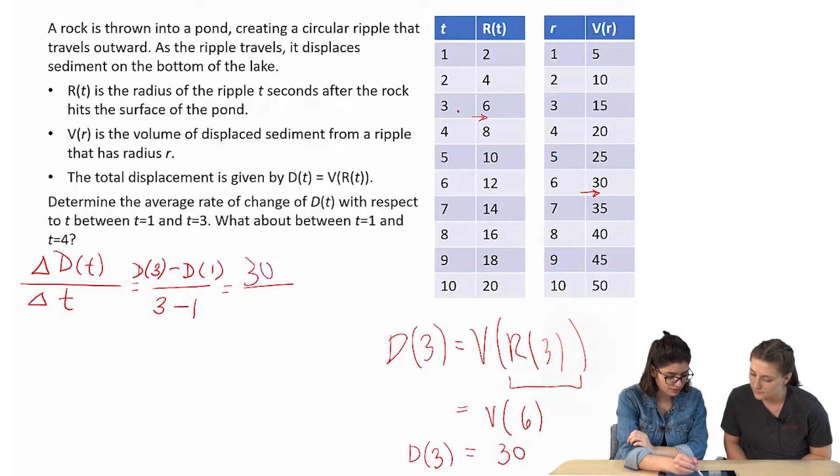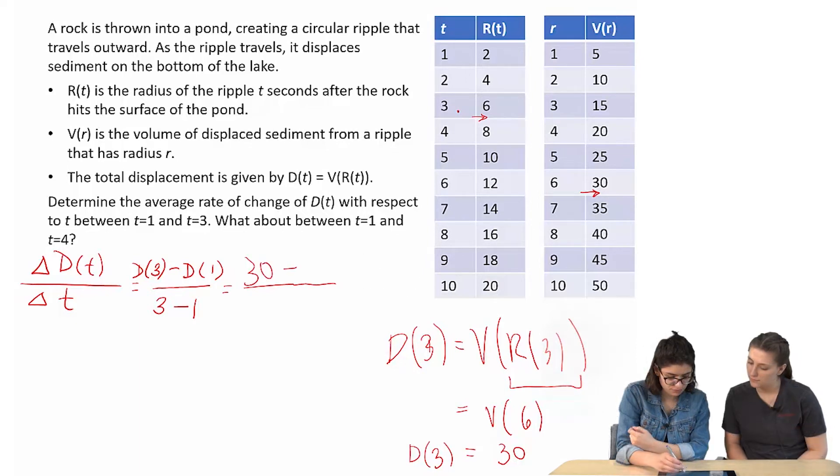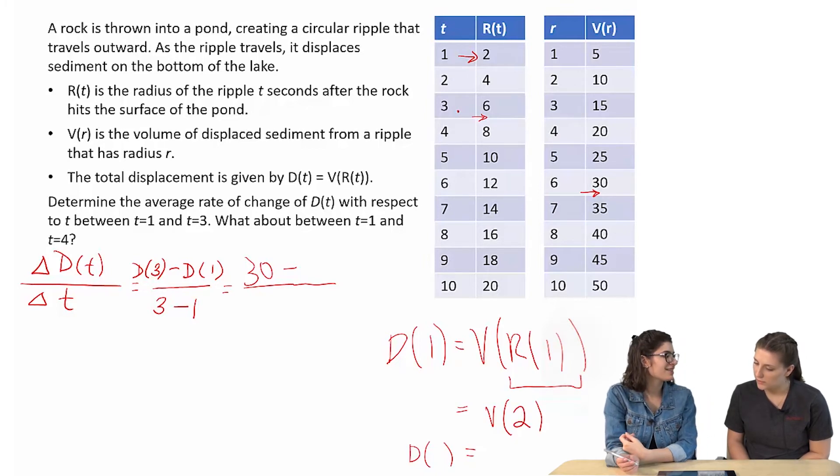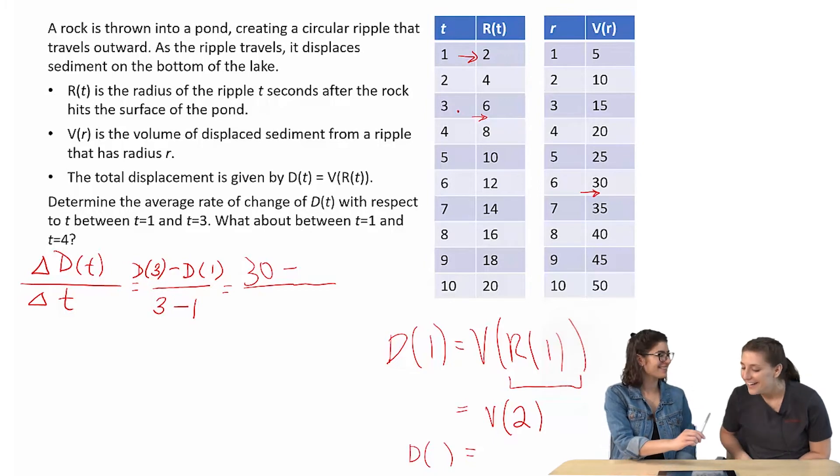And then D(1). Let's change these. So D(1), looking at V(R(1)). So R(1) would be 2. And V(2), well, do you want to do this part? Yeah. Thanks. It would be 10.